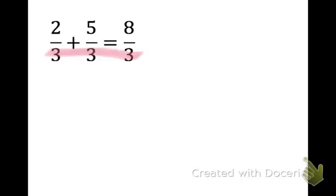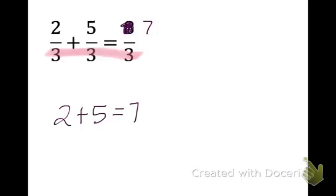Then what we can do is we can just set the tops equal. I see now I already have a mistake in here — this should have been a 7. So 2 plus 5 is 7. Once our denominators are the same, we can take the numerators, set them equal, and that's a true statement right there.